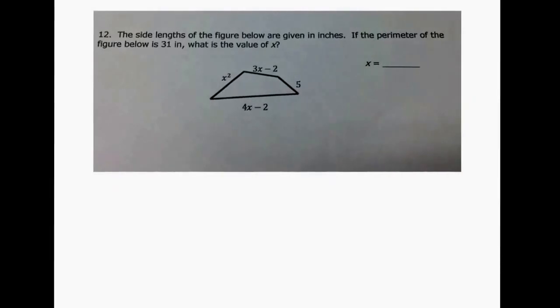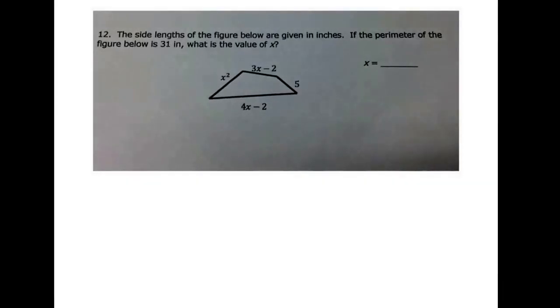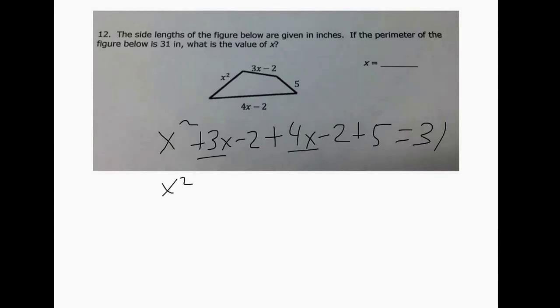The side lengths of the figure below are given in inches. If the perimeter of it is 31 so we're going to add up all these so x² + 3x - 2 + 4x - 2 + 5 = 31. Combine like terms so that's x² + 7x, -2 and -2 is -4 plus 5 is a positive 1.